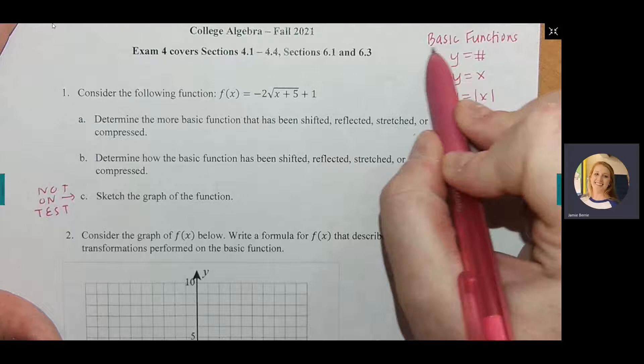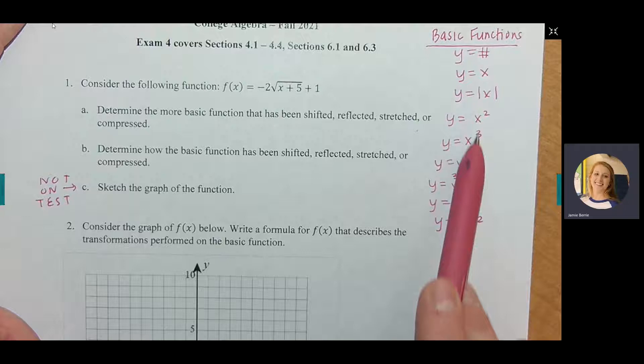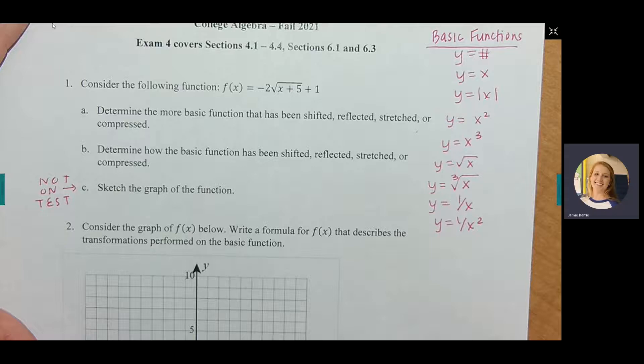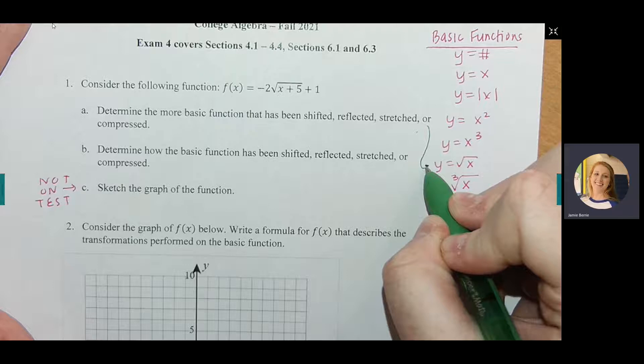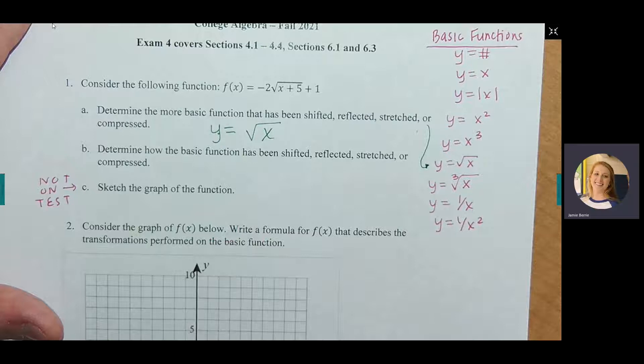For part A, it says determine the more basic function that has been shifted, reflected, stretched, or compressed. You look at f(x) and ask which basic function it most closely resembles. The answer here is square root of x — that's the basic function that has been shifted, reflected, stretched, or compressed. You can write y or f(x); they are the same thing.